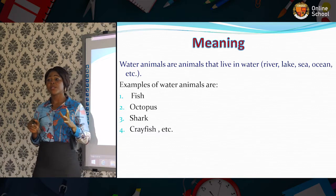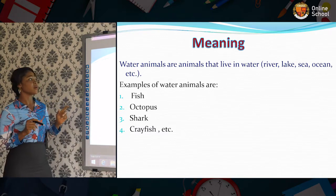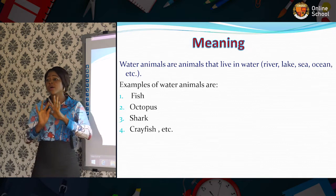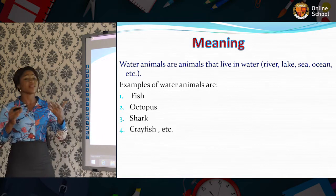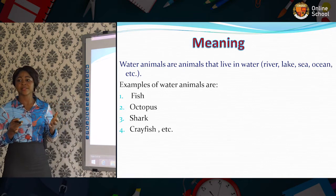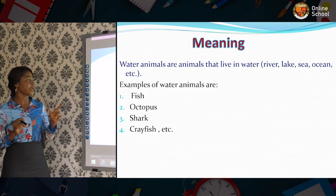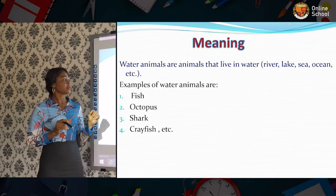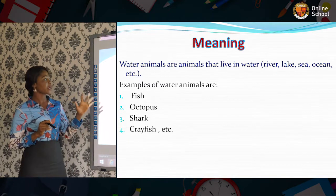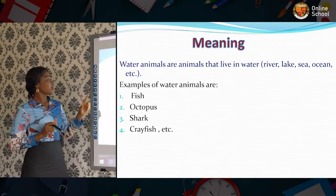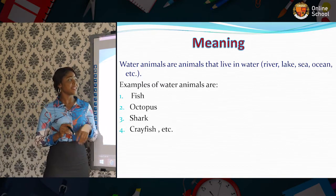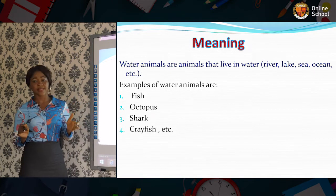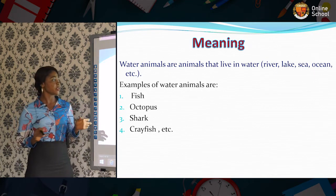First of all, we'll be looking at the meaning of water animals. We'll be focusing only on water animals. We have other animals, like land animals, but today we'll be learning water animals. So let's look at the definition. Water animals are animals that live in water — river, lake, sea, ocean.